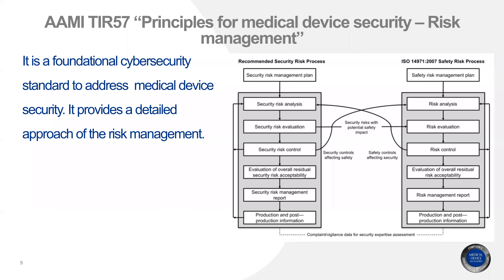The annexes in TIR 57 contain practical methods to implement the risk management process and a list of questions on how to identify security risks, just like safety risks in ISO 14971. TIR 57 supports risk management and refers to 14971 for safety risk management and NIST 830 for conducting risk assessments. Note that TIR 57 is not harmonized to EU MDR.